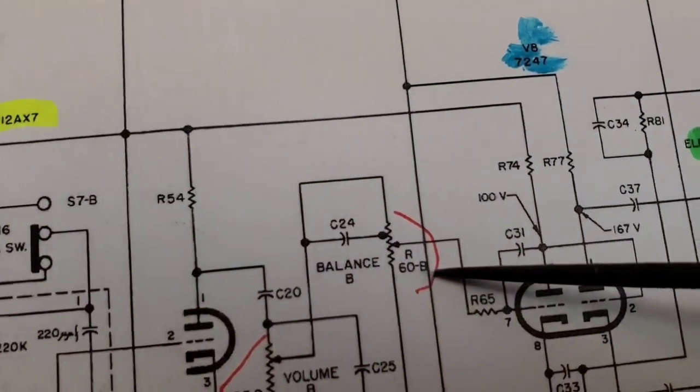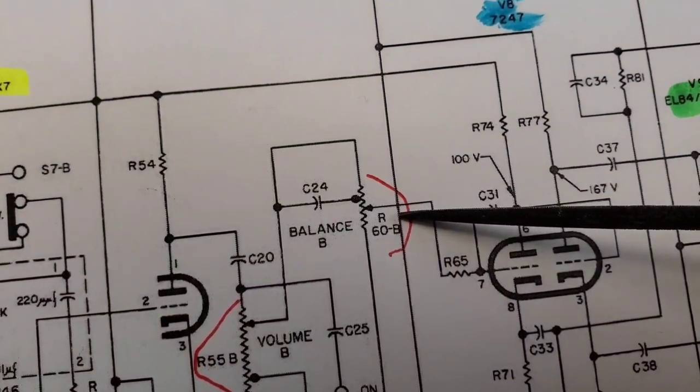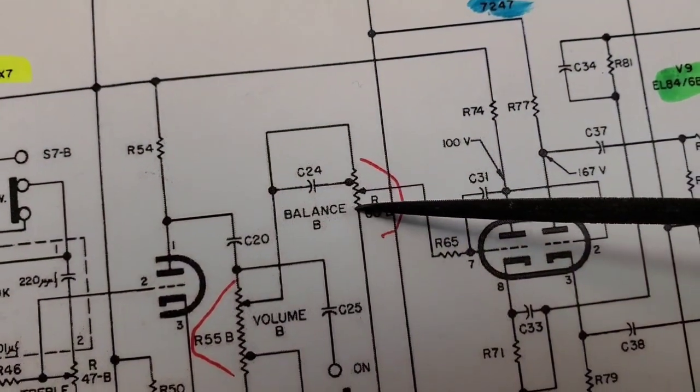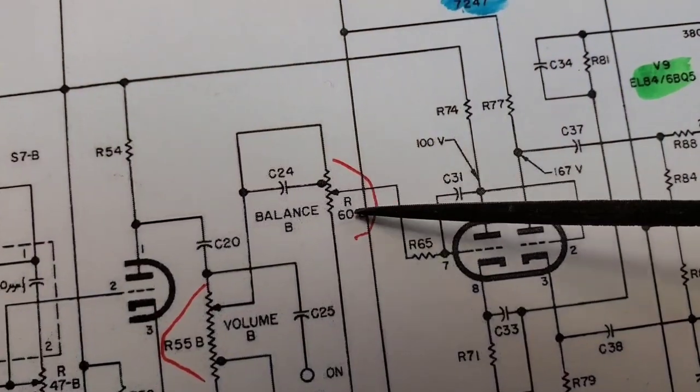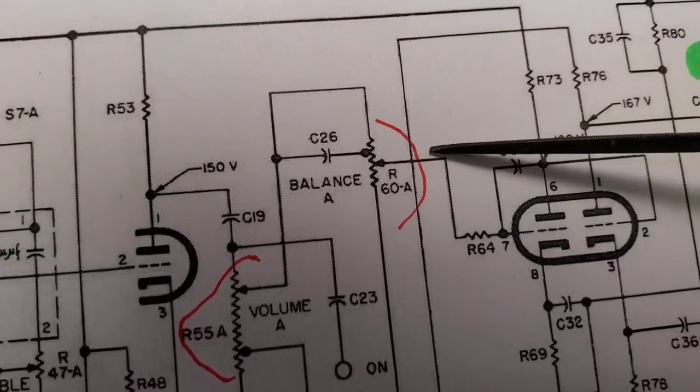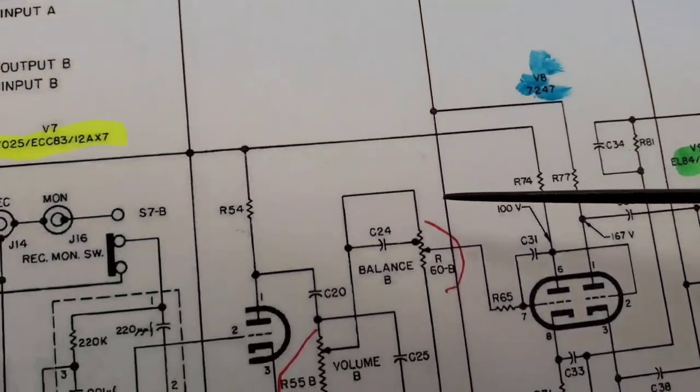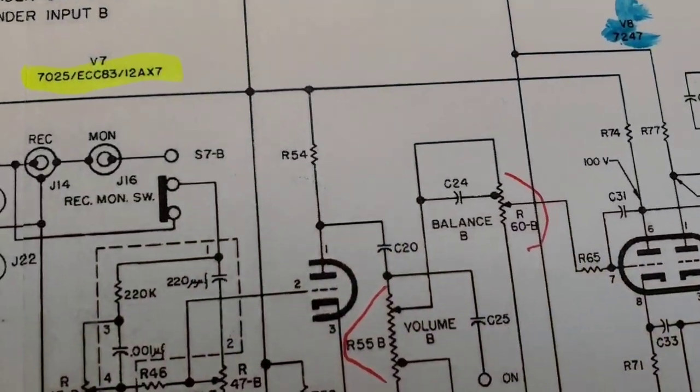This is the balance control. Same thing. It's a dual part, two parts on one shaft. And that's what this designates. See, balance B, R60B. We go up here and mark it so I can find it easy. R60A. So this is one channel. This is the other channel.